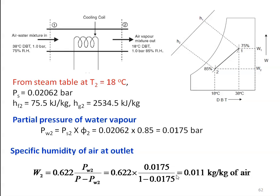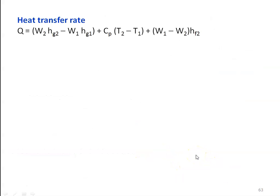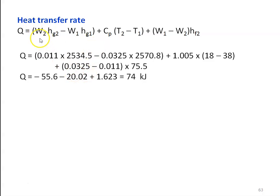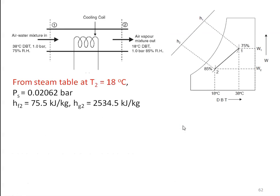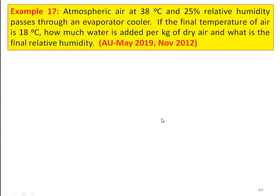The outlet specific humidity W2 is 0.011 kg per kg of air. The heat transfer rate Q equal to W2×HG2 minus W1×HG1, which is the heat transfer due to water vapor removal, plus Cp×(T2 minus T1) plus W1 minus W2 into HF2. Substituting all numerical values: Q equal to 0.011×2534.5 minus 0.0325×2570.8 plus 1.005×(18 minus 38) plus (0.0325 minus 0.011)×75.5. The heat transfer equals 74 kilojoules. The answer: heat transfer equals 74 kilojoules.